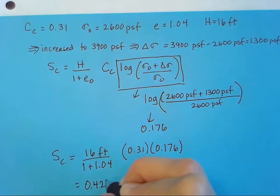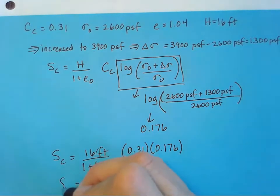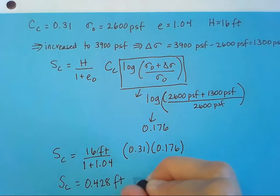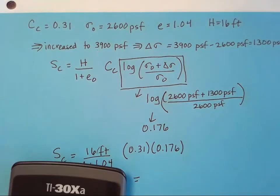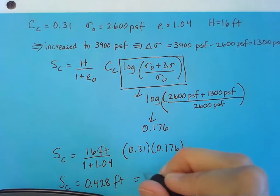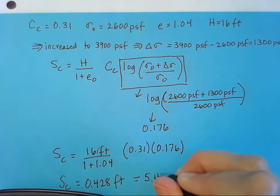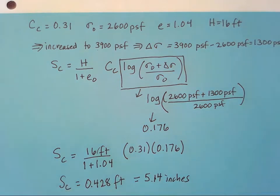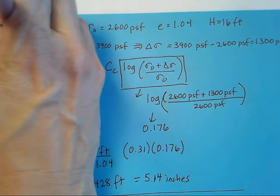I'm sorry, 0.428 feet. We use the units that we're using for the H there. Let's go ahead and convert that into inches. We'll multiply it by 12 and we get 5.14 inches. So that's how we do part A of number nine.